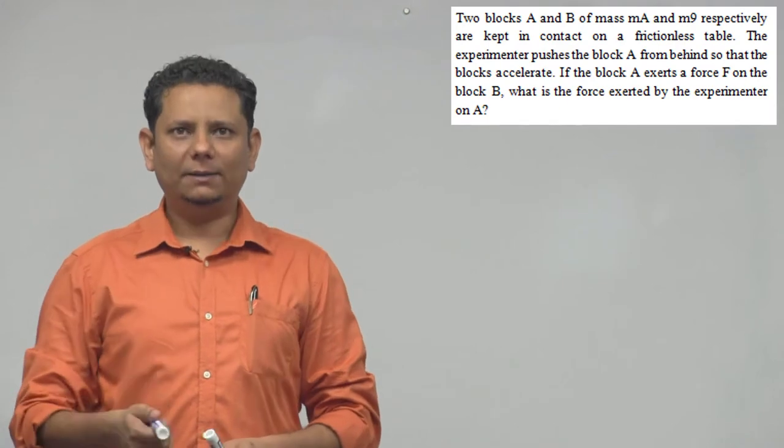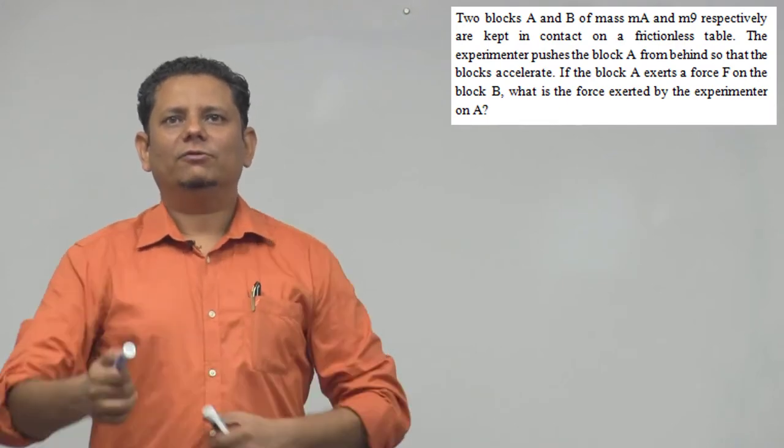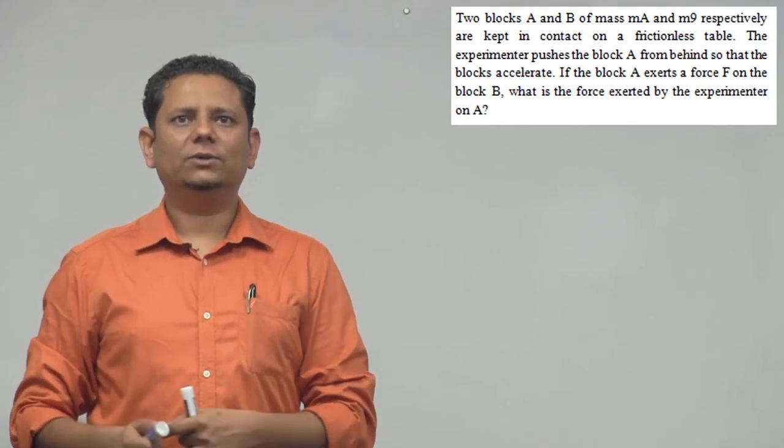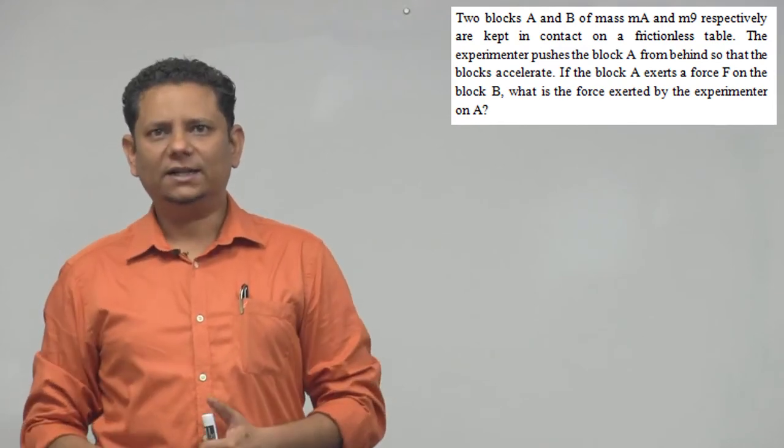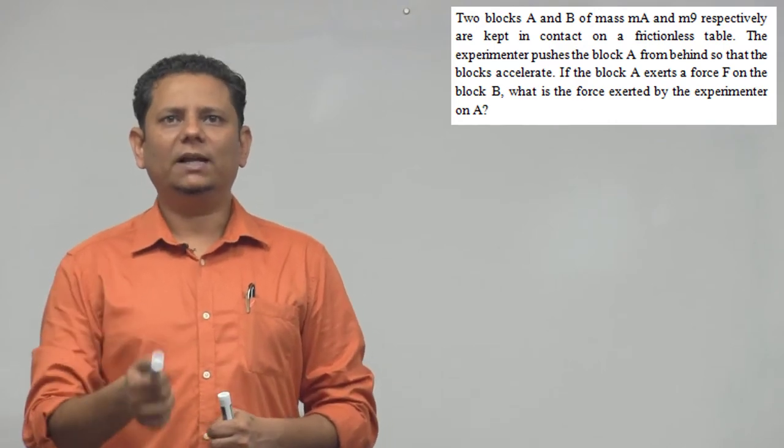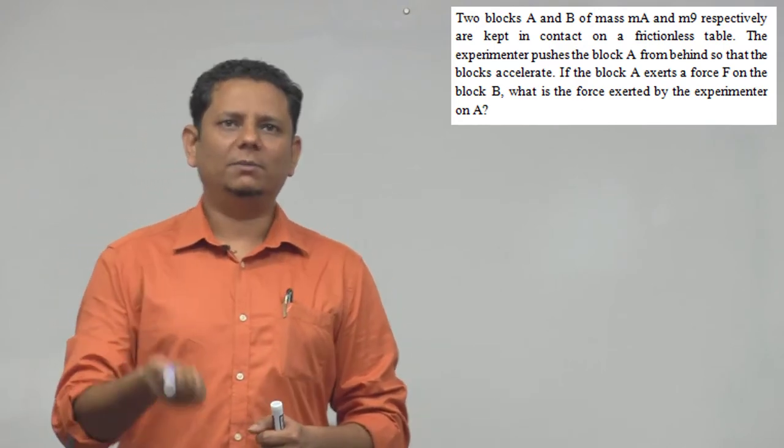Next question: Two blocks A and B of mass mA and mB respectively are kept in contact on a frictionless table. The experimenter pushes block A from behind so that the blocks accelerate. If block A exerts a force F on block B, what is the force exerted by the experimenter on A?